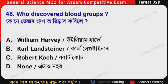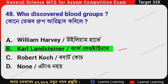Next question: Who discovered blood groups? (Assamese: Kone tiyazor group abhishkar kori lhe?) The correct option is Option B — Karl Landsteiner. Karl Landsteiner discovered blood groups.